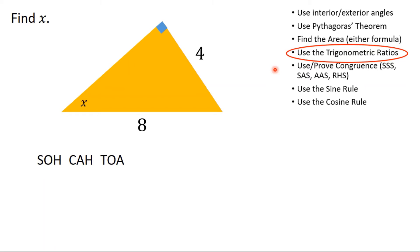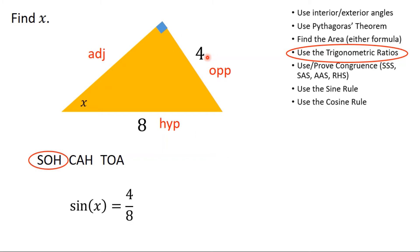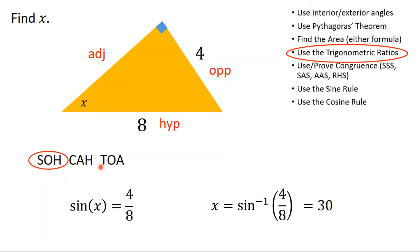Now I get another bit of method selection: which of SOHCAHTOA am I going to use? I need to label my sides — adjacent, opposite, hypotenuse — and I can see it's the opposite and the hypotenuse that are involved. So sine of x equals 4 over 8, because it's opposite over hypotenuse. Therefore x equals the inverse sine of 4/8, which is an exact value, so x equals 30. The first step — working out what to do — is arguably the hardest step. Once I've worked that out, I just carry on with it.